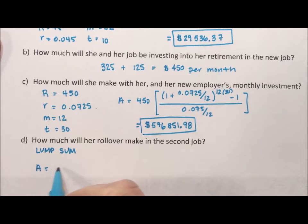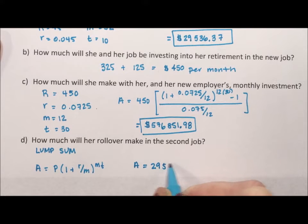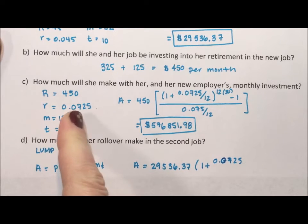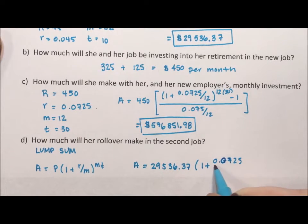If it is a lump sum, that means we're going to use A equals P times 1 plus r over m to the mt. So we say A equals $29,536.37 times 1 plus 0.0725 divided by 12, because it's still the same account, so it's still this 7.25% monthly for 30 years. And we find out after 30 years that money, this just under $30,000, this lump sum that she just dumped in there and left for 30 years, grew to be $258,288.82.